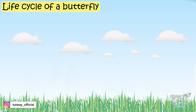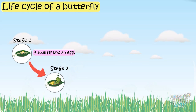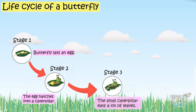In stage 1, the butterfly lays an egg. In stage 2, the egg hatches into a caterpillar. In the next stage, the small caterpillar eats a lot of leaves and grows into a big caterpillar.